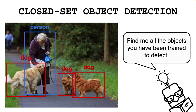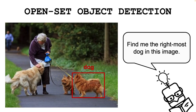First of all, I would like to clarify the difference between closed set and open set object detection. Closed set object detection is what we have been studying in this series so far, and it focuses on recognizing objects from a predetermined set of known classes. In contrast, open set object detection not only identifies known objects, but also detects and categorizes previously unseen or unknown objects.